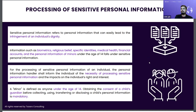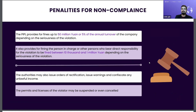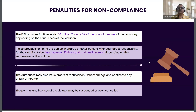Moving to the next slide: penalties for non-compliance under PIPL. The penalty is 50 million yuan, which is not as high as India's data privacy law, which specifies 250 crores. Converting 50 million yuan to INR comes to approximately 57 crores, or roughly seven million USD — around 75 crores.